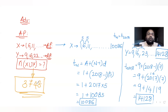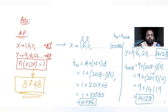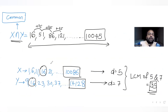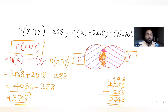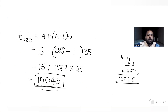I hope you have understood how to solve this type of question where we find how many elements are present in the union of two lists — where X was a list with common difference 5 and Y was the list with common difference 7. We figured out the last terms, then found X intersection Y with 288 terms, and used that to get the total number of elements in X union Y.